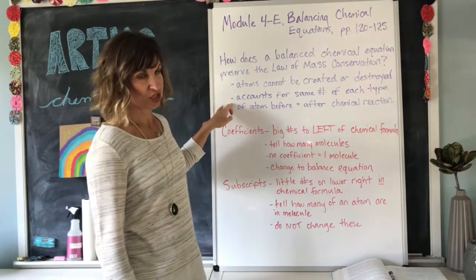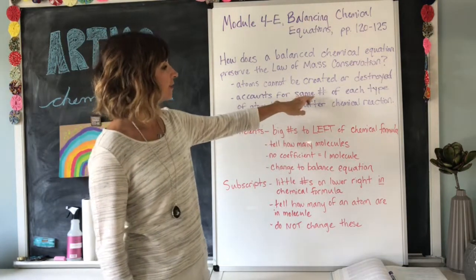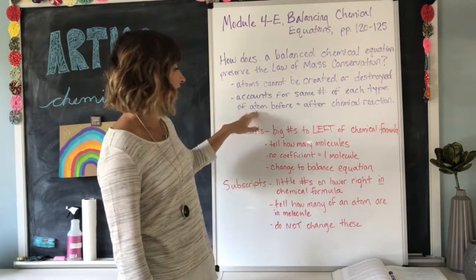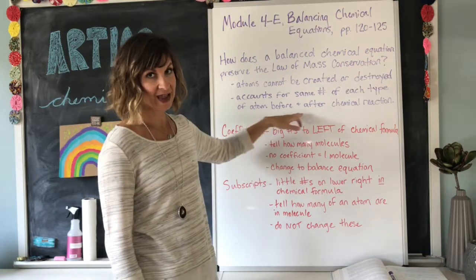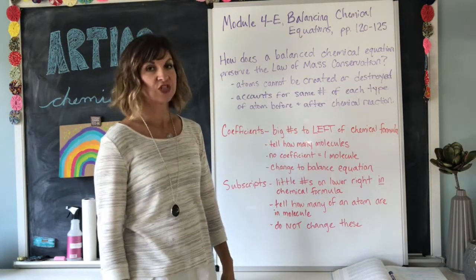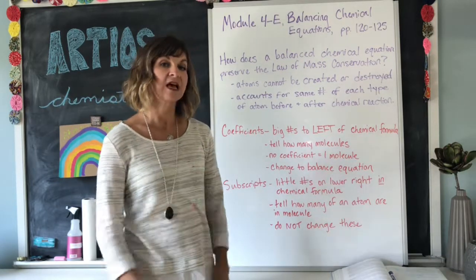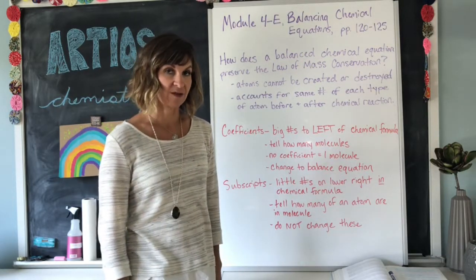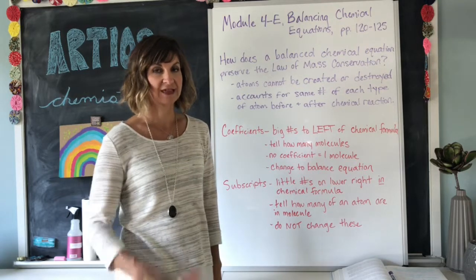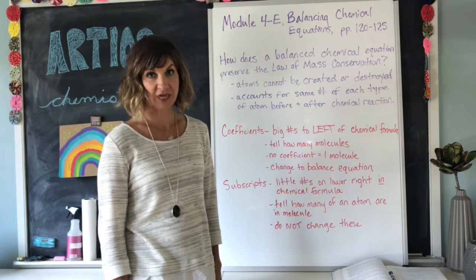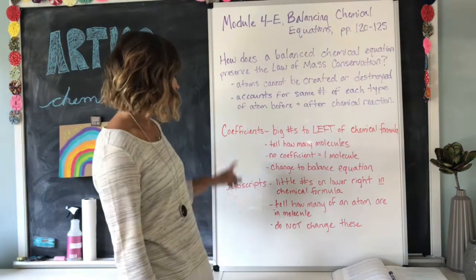A balanced chemical equation accounts for the same number of each type of atom before and after the chemical reaction. So the atoms may rearrange and they may join different molecules, but the same number of atoms are still going to be present. So that's how we can make sure that matter is not created or destroyed.